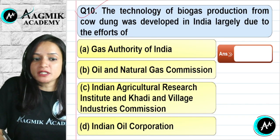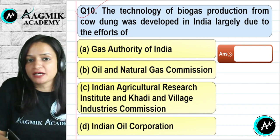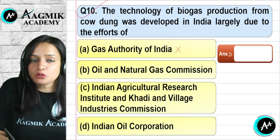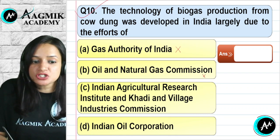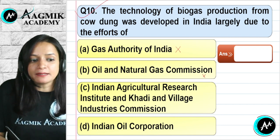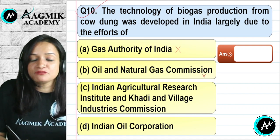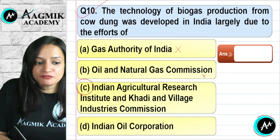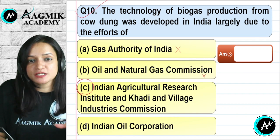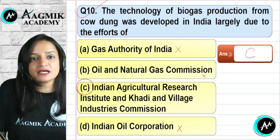Question number 10: The technology of biogas production from cow dung was developed in India largely due to the efforts of the Indian Agriculture Research Institute (IARI) and the Khadi and Village Industry Commission. The Gas Authority of India and the Oil and Natural Gas Commission are not the right answers. The correct option is C.